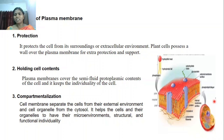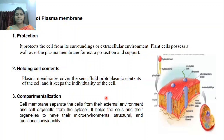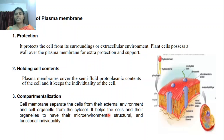Here the outermost covering, the plasma membrane, shows a very complex structure where the double membrane covers the entire cell contents and provides compartmentalization, meaning the cell has its own compartment. The cell membrane separates the cells from their external environment and the cell organelles from the cytosol. It helps the cell and their organelles to have their microenvironment, structural and functional individuality.